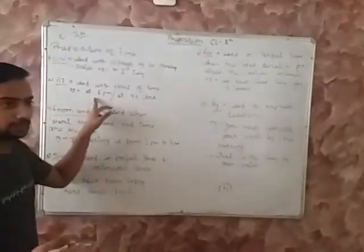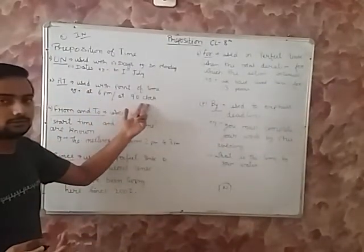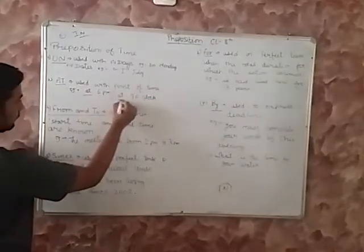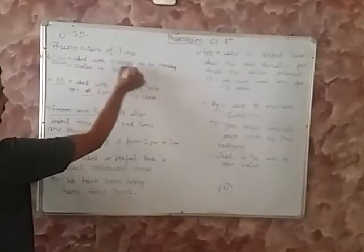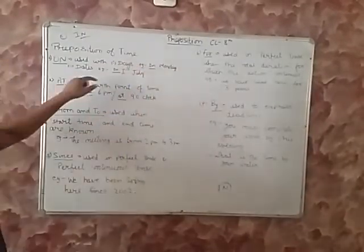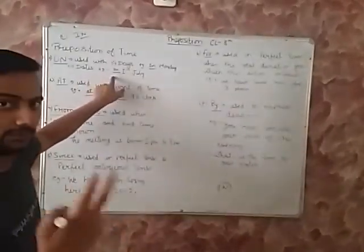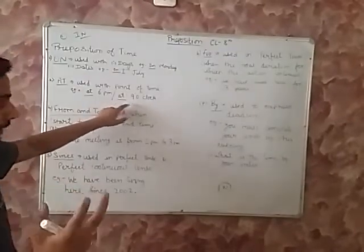Like for example, at 6pm, at 9 o'clock. Here we use at. Here on. On with days and dates. Days and dates we use on. Fixed point of time we use at.